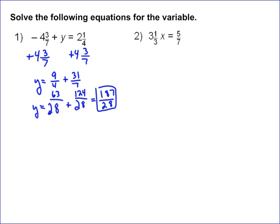On problem 2, this is no longer addition. This is a multiplication problem. So I have to get rid of the 3 and 1 third, because it's multiplied by x. I have to do the opposite, which is either divide by that or multiply by the reciprocal, which is what I'm going to do. So let's first change it to improper fractions.